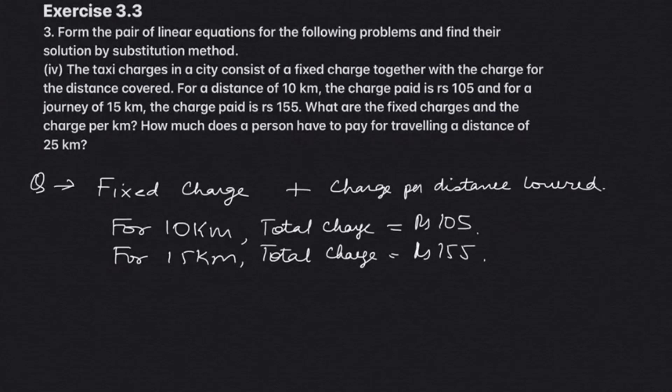It is the next question for the soft course of the day. The taxi charges in a city consist of a fixed charge together with the charge for the distance covered. For a distance of 10 km, the charge paid is Rs. 105, and for a journey of 15 km, the charge paid is Rs. 155. What are the fixed charges and the charge per kilometer?